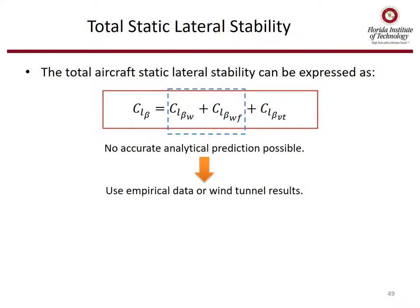The total aircraft static lateral stability can be expressed as C_L beta equals C_L beta of the wing plus C_L beta of the wing-fuselage plus C_L beta of the vertical tail. The wing and wing-fuselage analytic predictions are not highly accurate, so empirical data or wind tunnel results must be used.